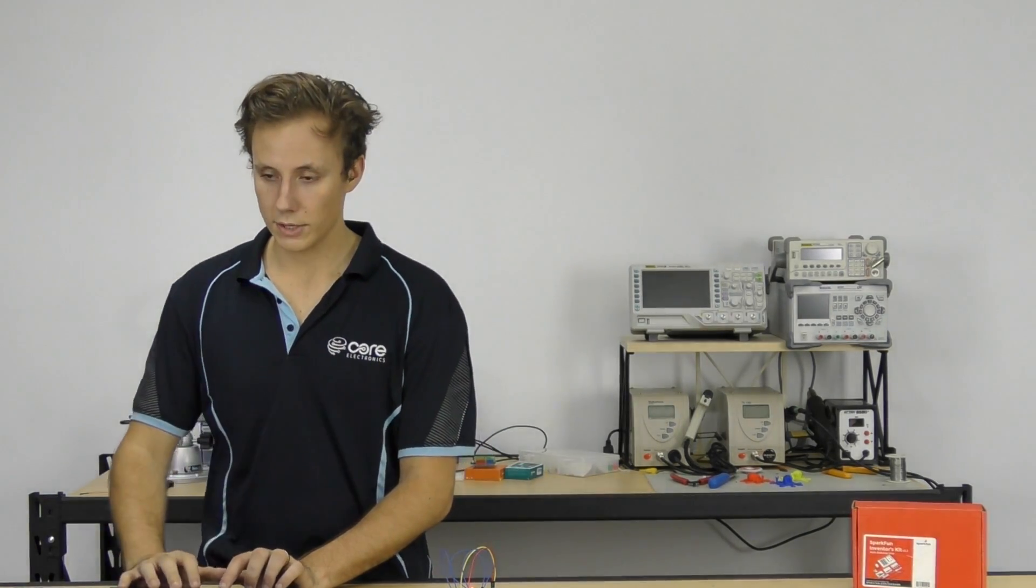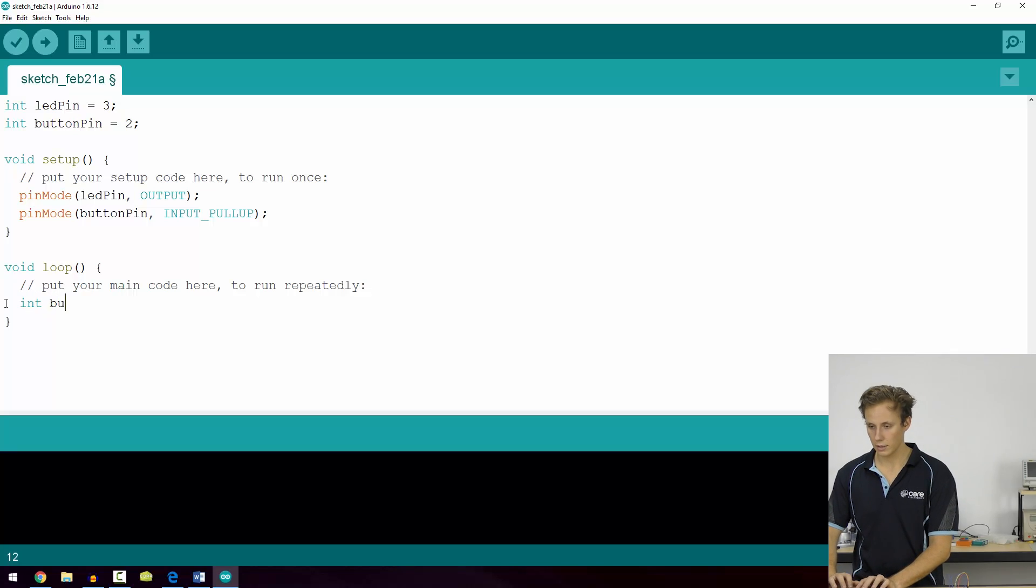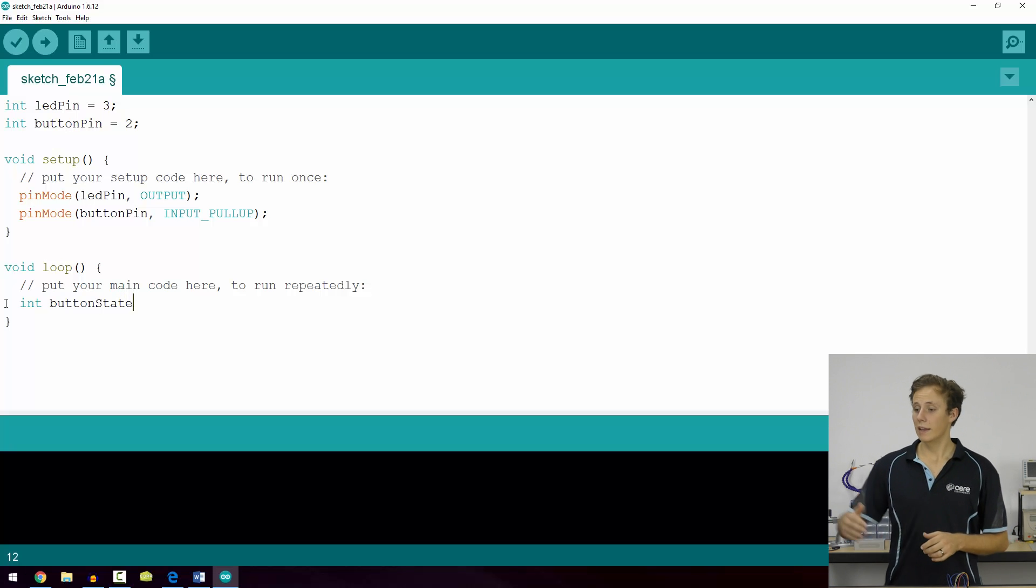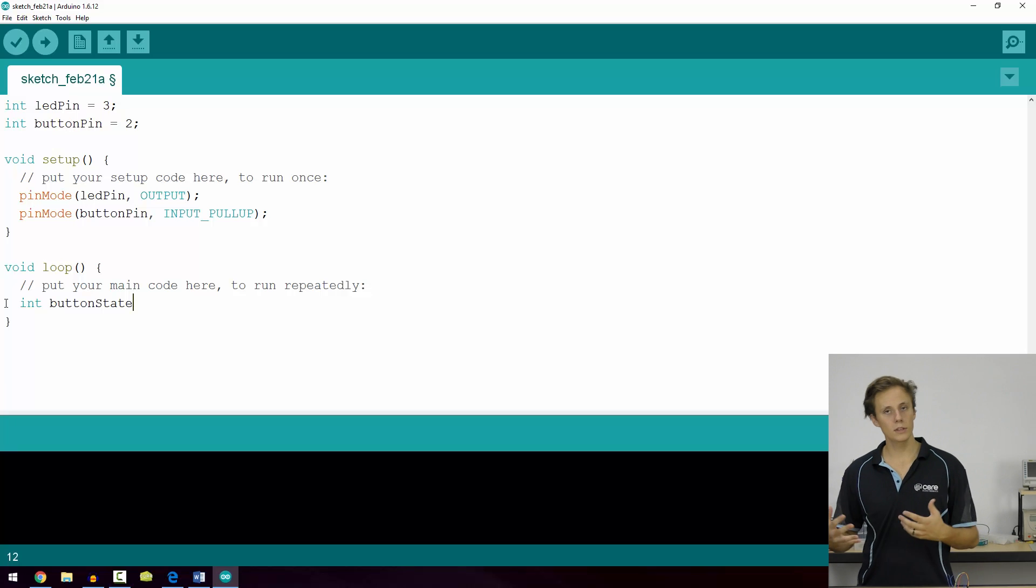So the first thing inside our void loop, which is going to iterate over and over again, is going to be a variable declaration. We're going to create button state, and we're going to use that to store the state of our button. Now, we're going to be using the method called polling, which means rather than triggering only when the button is pressed, our loop's iterating so quickly hundreds of thousands or millions of times per second, just going over and over and over again. So that many times per second, it's going to check the state of our button and do something with it. Really clean, really efficient, easy to use. Button state is going to be equal to the state of the input pin so we can store it.